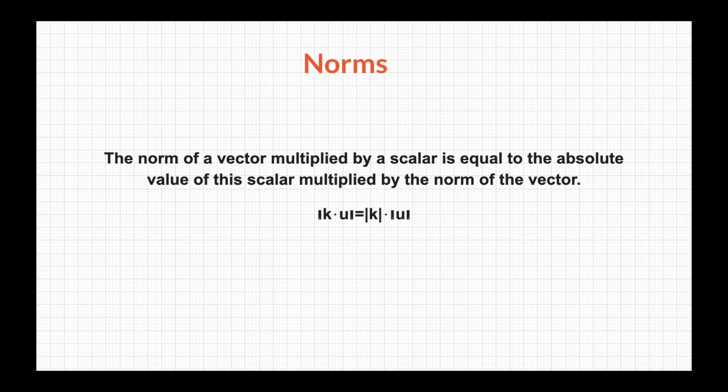The fourth and final property is that the norm of a vector, when multiplied by a scalar, equals the absolute value of that scalar multiplied by the norm of the vector. So the norm of k multiplied by u equals the product of the absolute value of k and the norm of u.